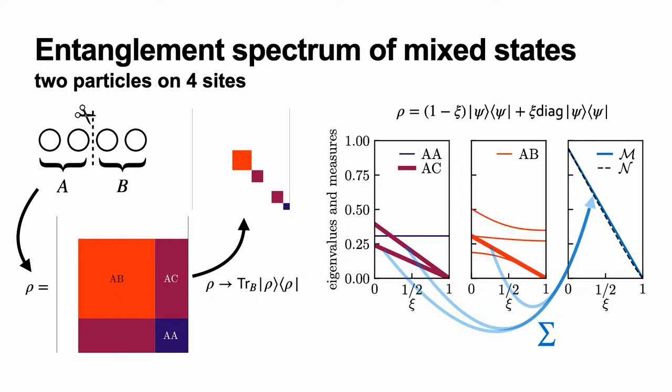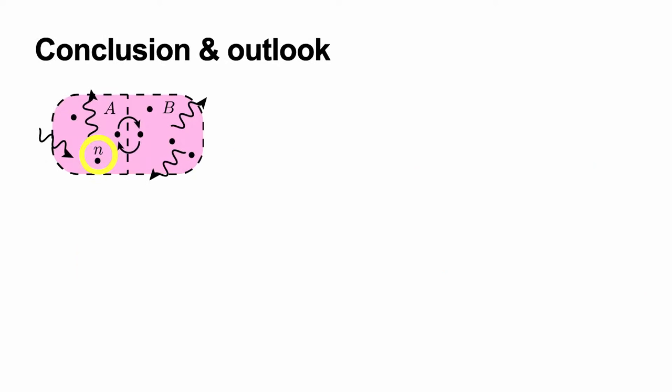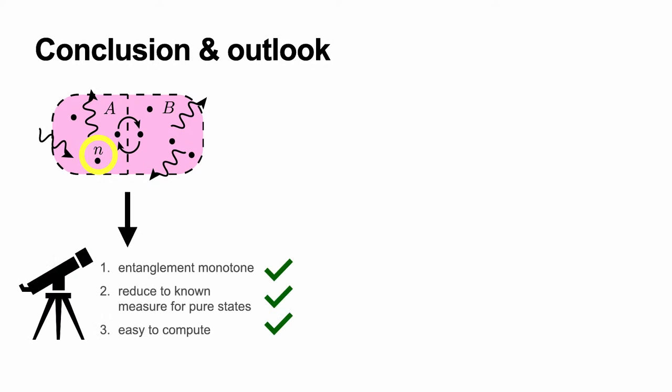With these two examples, I'd like to conclude. We have shown that for mixed states with a fixed particle number, we should look at the entanglement spectrum, and via the entanglement spectrum we can define an entanglement measure for mixed states — like this telescope — which ticks all the boxes: it is an entanglement monotone, it reduces to a known measure (namely the negativity) in the limit of pure states, and it is easy to compute because we get it from tensor network representations.